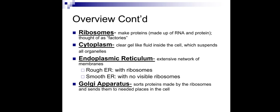The endoplasmic reticulum is an extensive network-like membrane structure, and it has two types: rough endoplasmic reticulum, which has ribosomes, and smooth endoplasmic reticulum, which has no ribosomes. It helps keep the cell's structural strength.